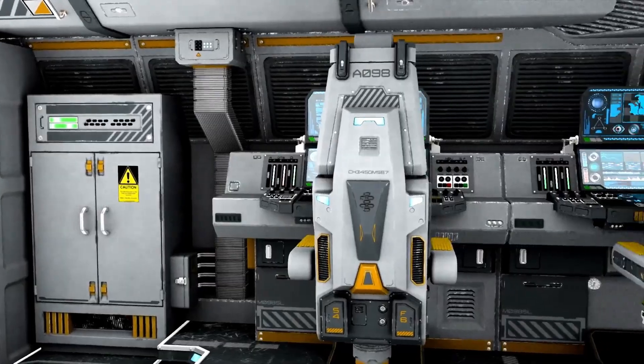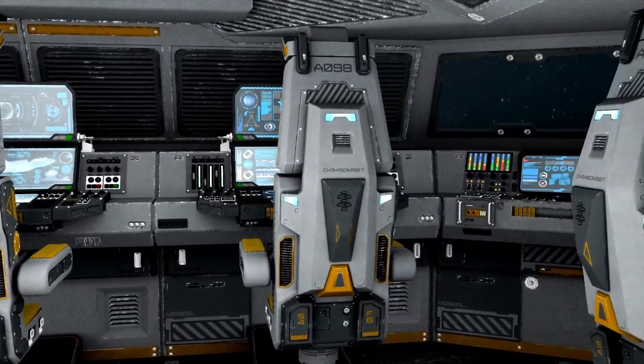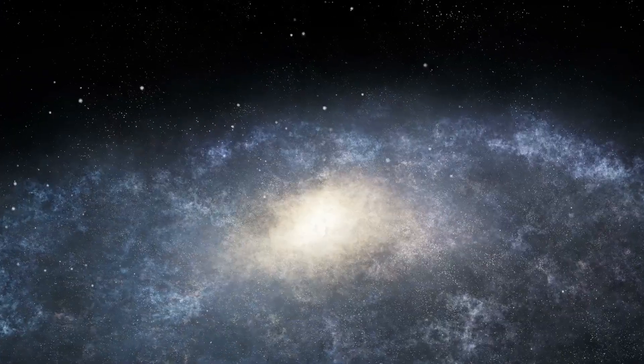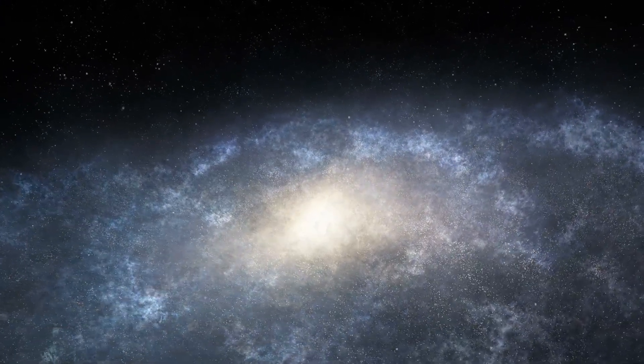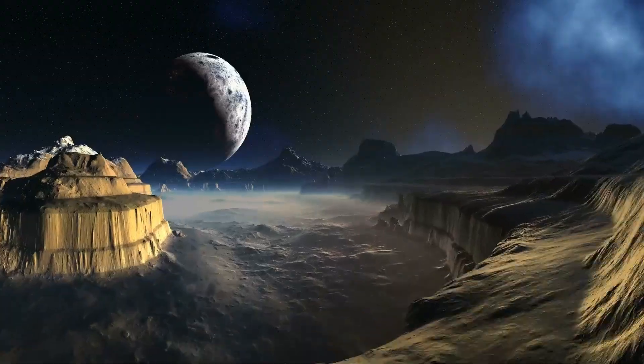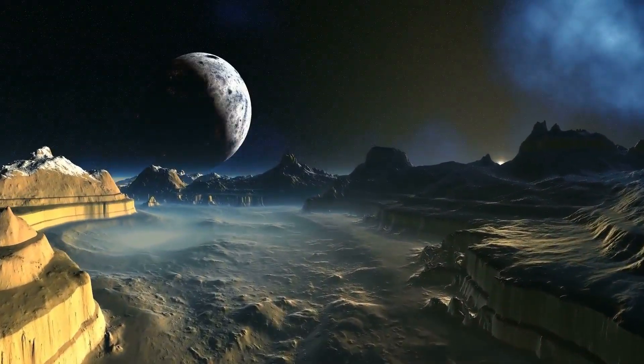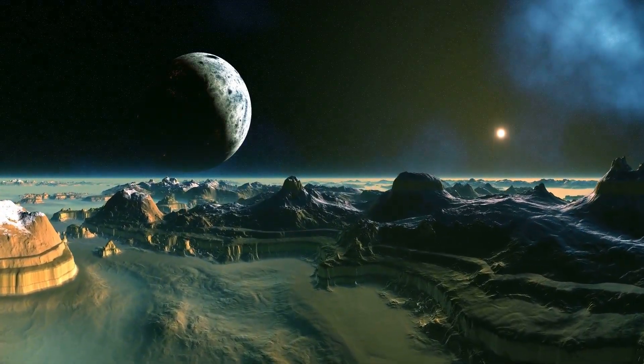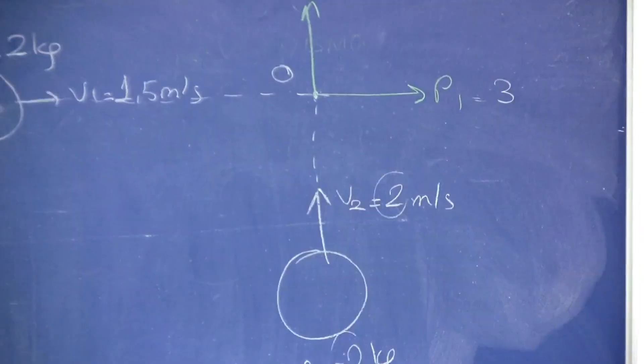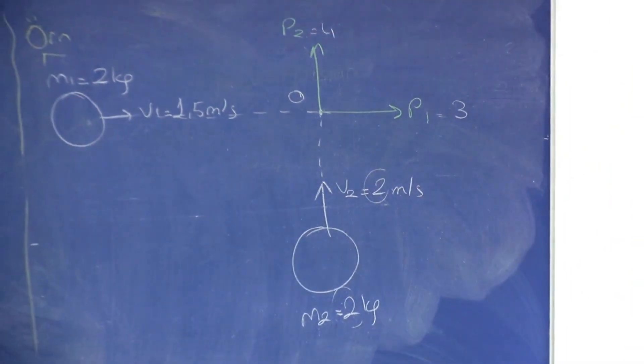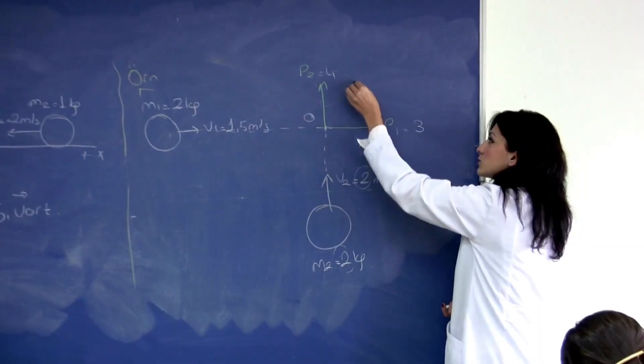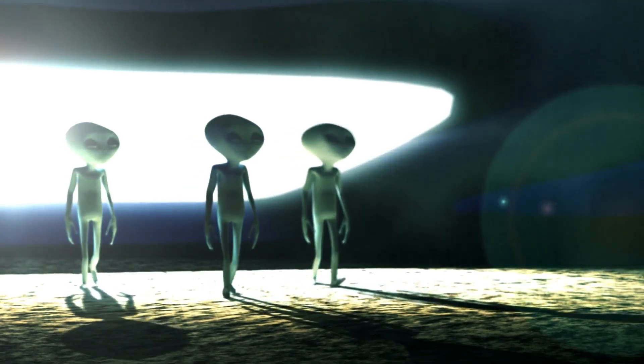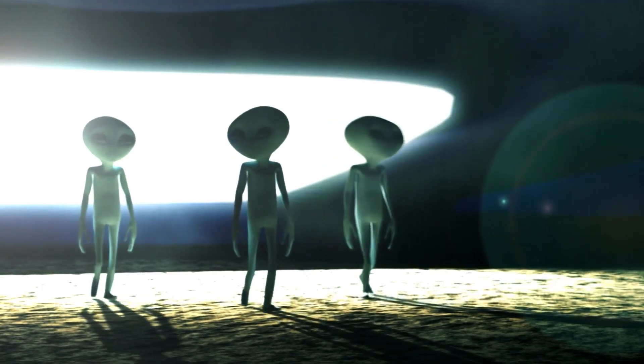The reversal also had a precise timing that made it more unsettling. It occurred just after the object had passed the heliopause, the boundary separating the solar wind from interstellar space. The timing suggested a relationship between the solar environment and the object's behavior. Perhaps some property of the heliospheric current sheet had triggered the change, or maybe the object had responded to the transition between different plasma densities. Whatever the cause, 3i Atlas appeared to have reacted to a specific threshold, as though it recognized it.